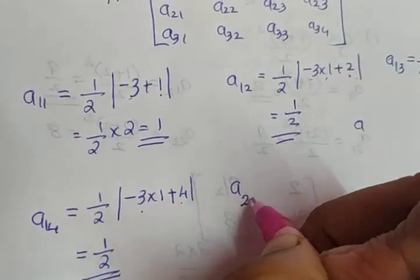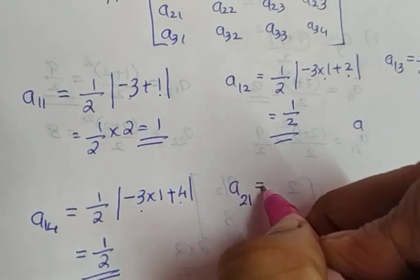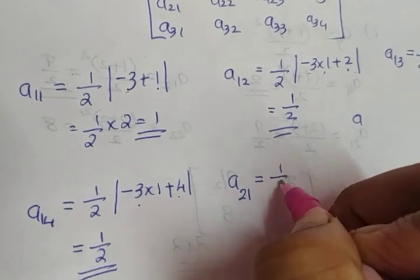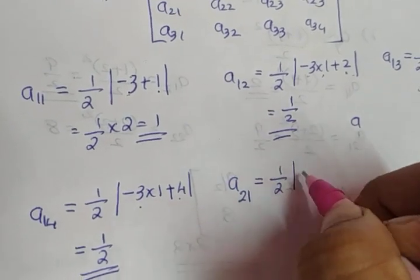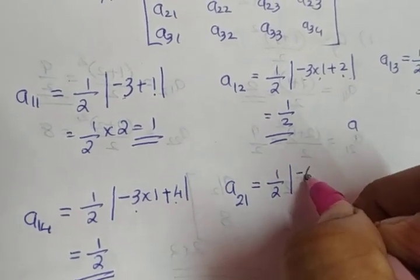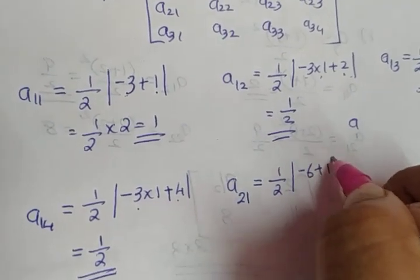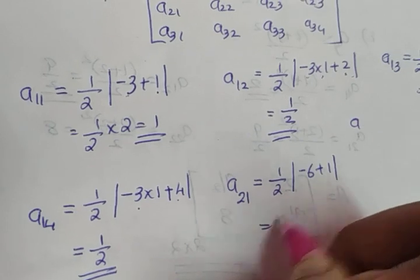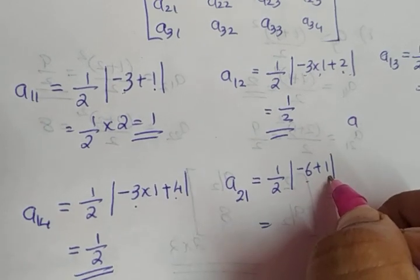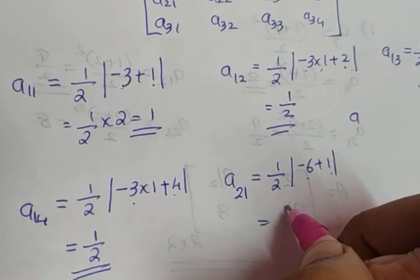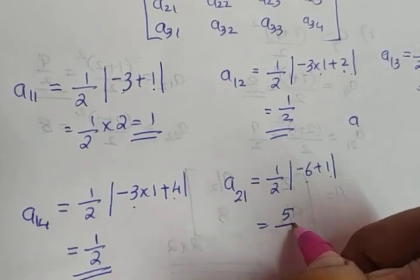We move to A21. A21 is equal to 1 by 2 into minus 6 plus 1, which gives you minus 5. When we take the modulus it will be 5. So A21 is 5 by 2.